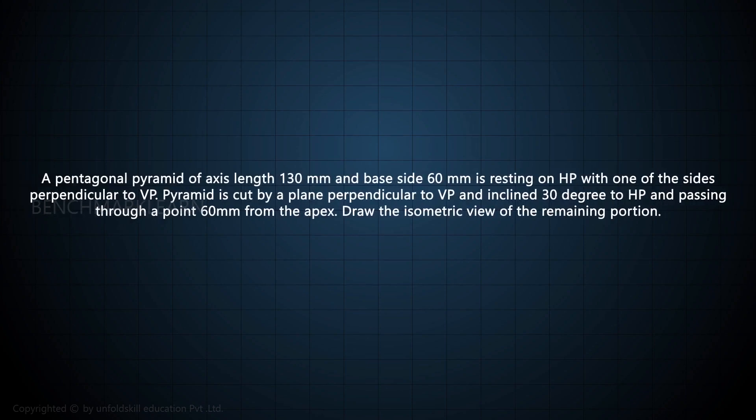A pentagonal pyramid of axis length 130 mm and base side 60 mm is resting on HP with one of the sides perpendicular to VP. The pyramid is cut by a plane perpendicular to VP and inclined 30 degrees to HP, passing through a point 60 mm from the apex. Draw the isometric view of the remaining portion.